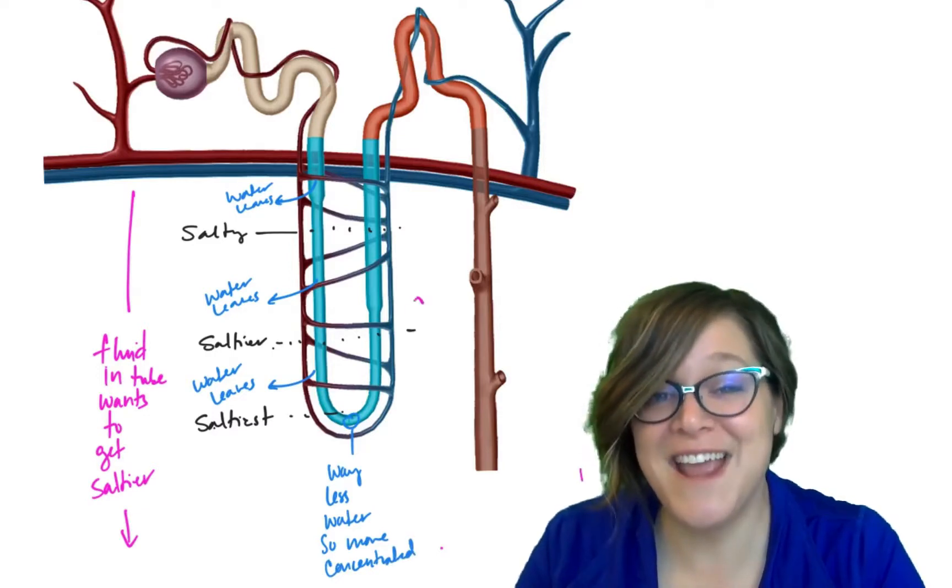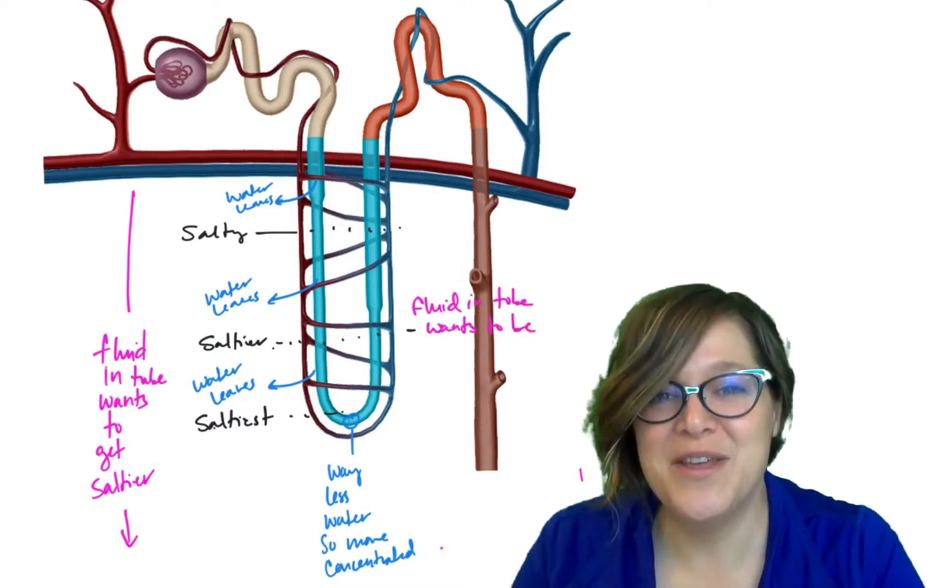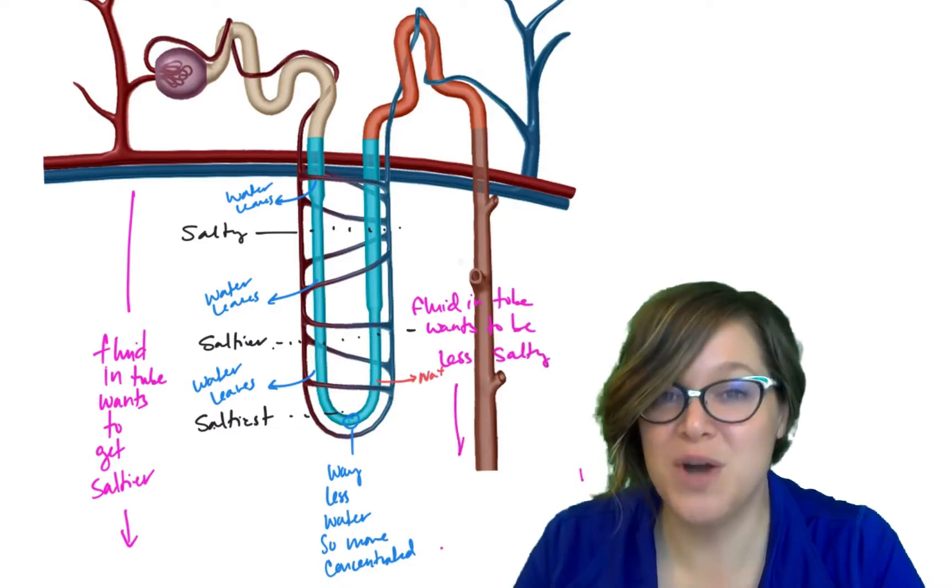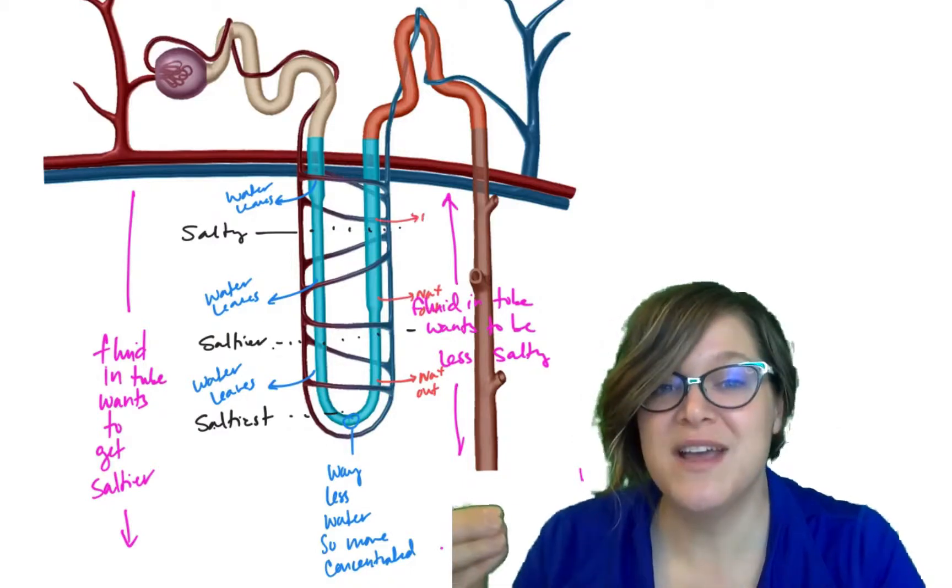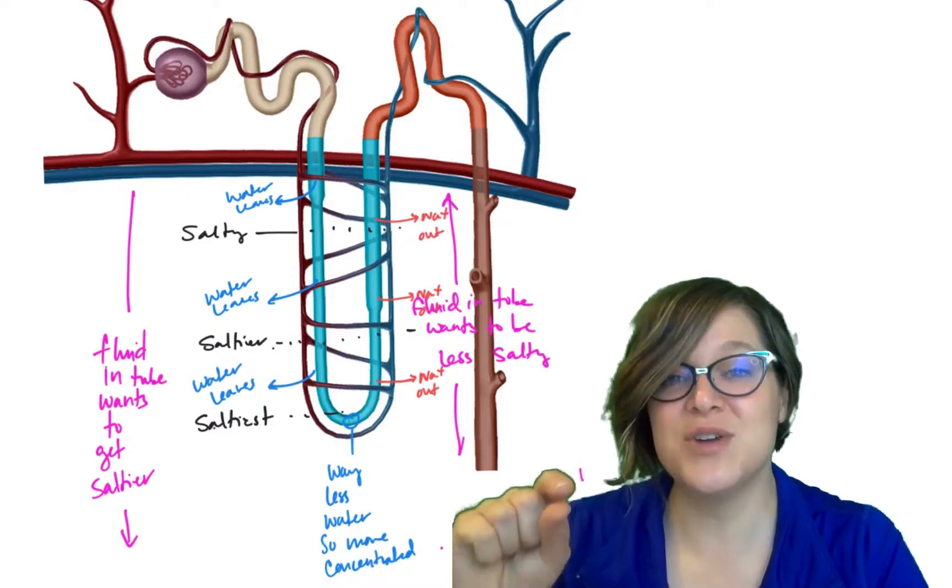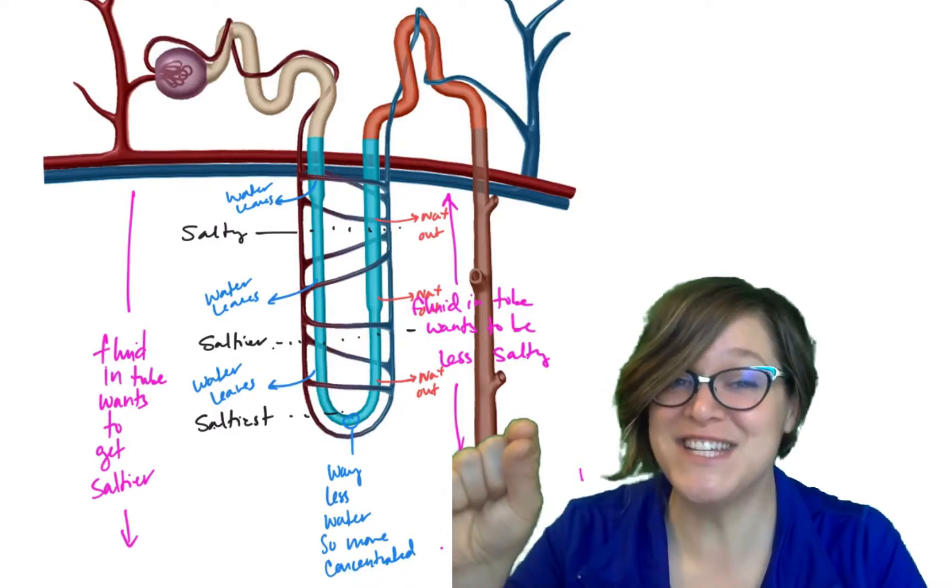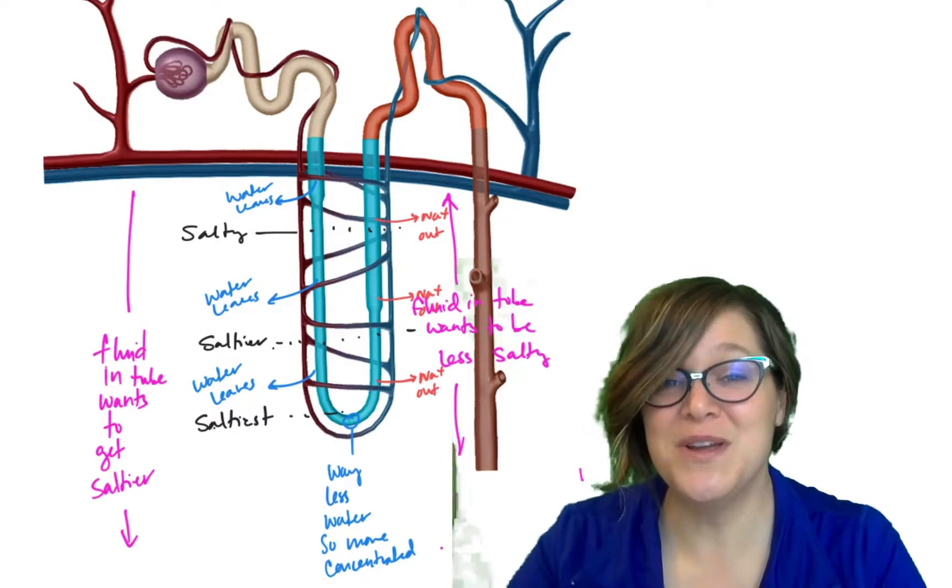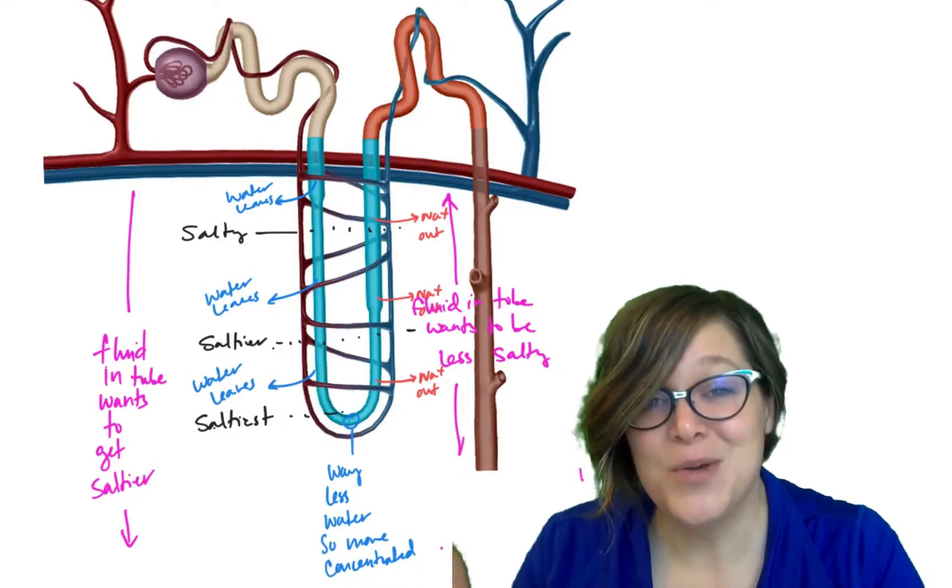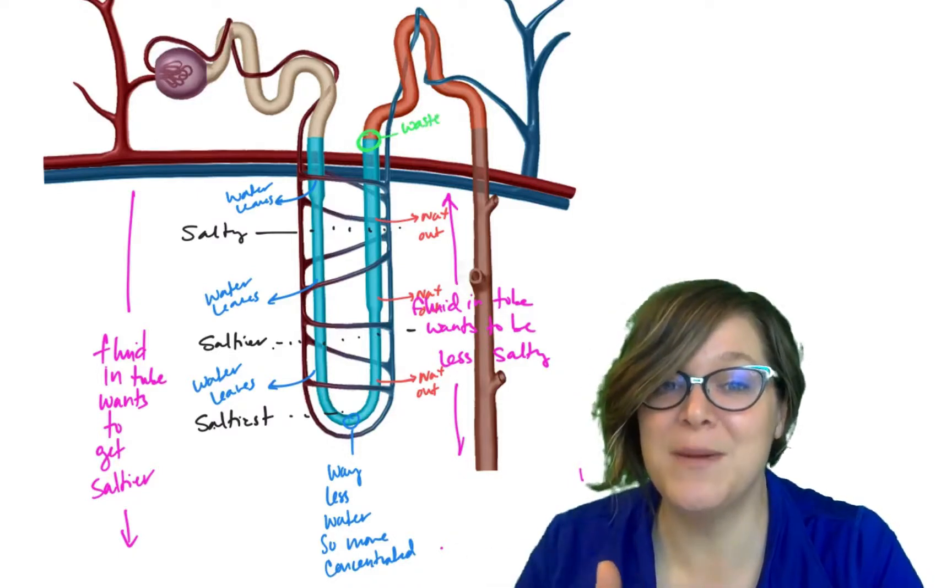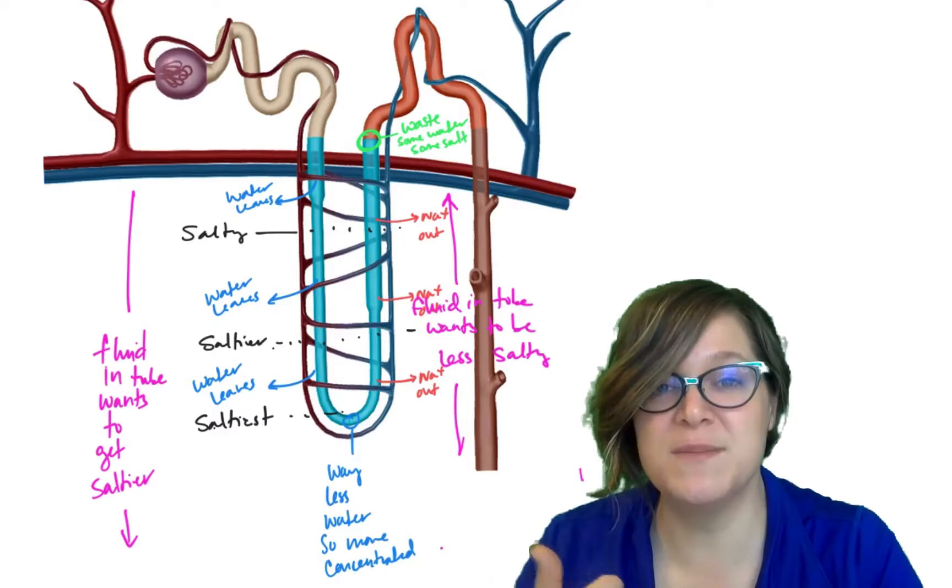On our way up, the ascending limb of the loop of Henle, the limb is no longer permeable to water. Now it's permeable to salt. And what this means is that salts are going to start getting pulled out because as it's going upward, it's again going to try to equilibrate with its environment outside of itself. The environment outside of it is getting less and less salty. So the salt is going to try to go out to equilibrate the salt concentrations on both sides. By the end, we have the same concentration that we had going in, but what's in that urine is different. We've reabsorbed the sodium, we've reabsorbed water, and what we're left with is waste.